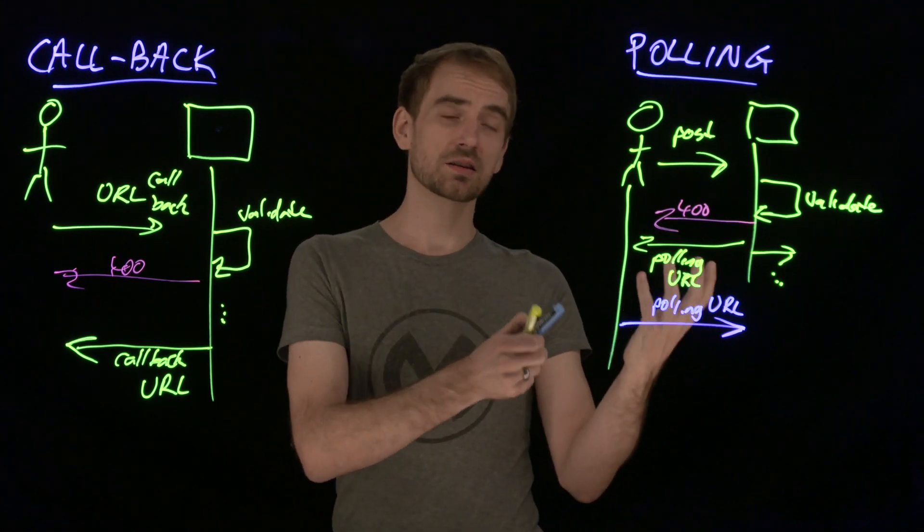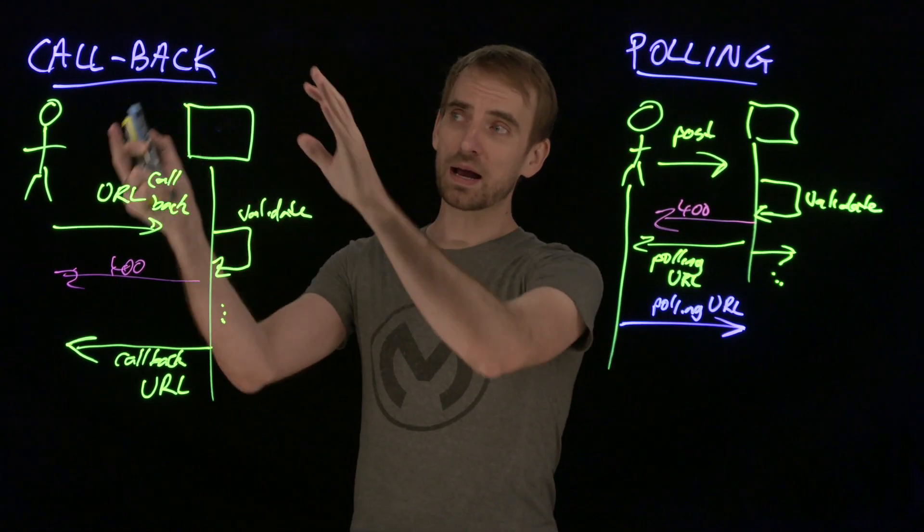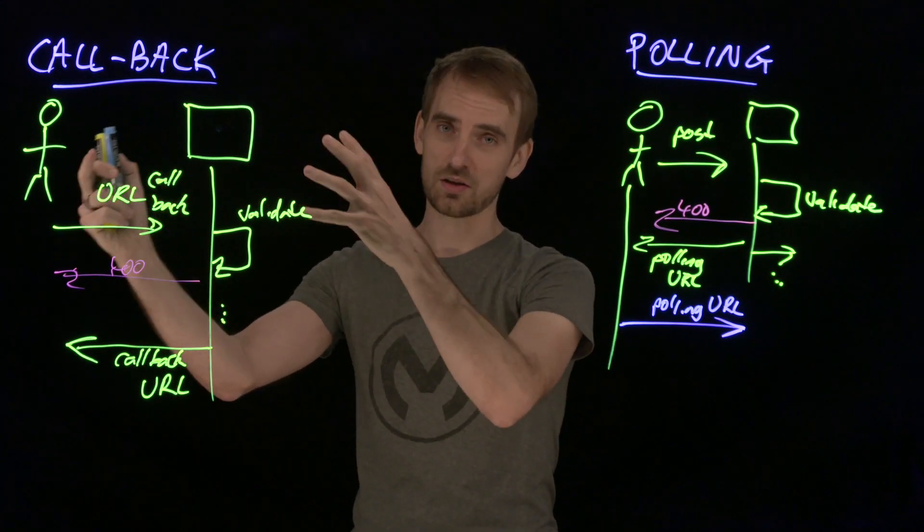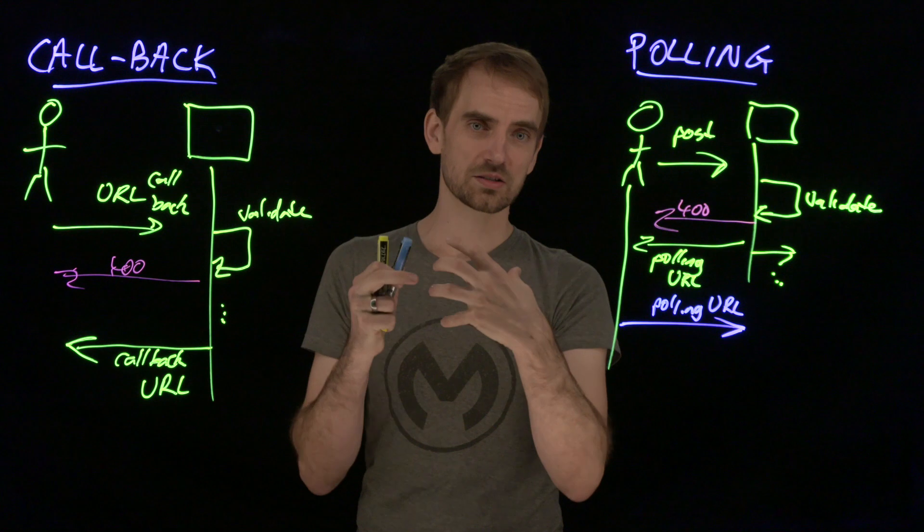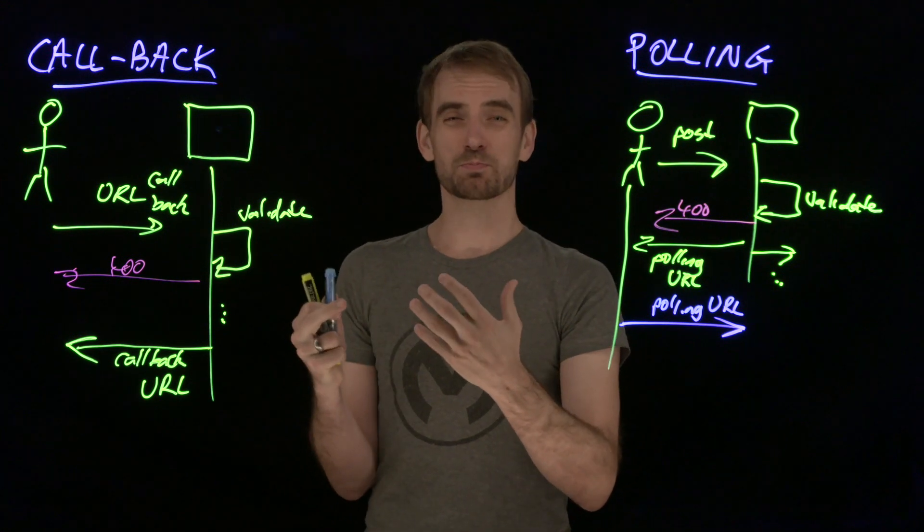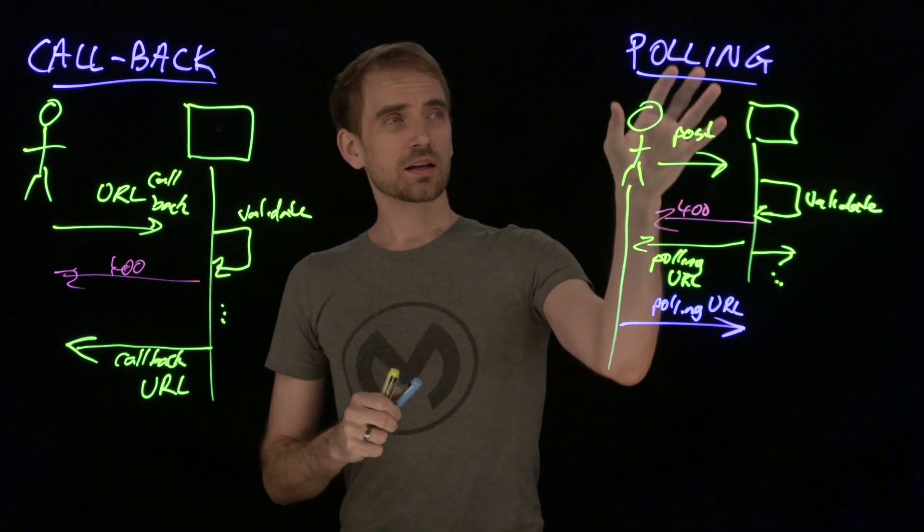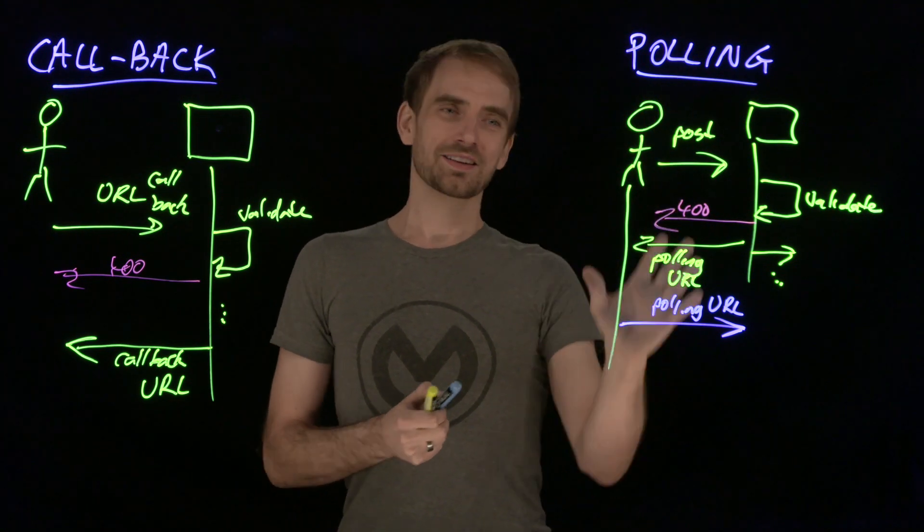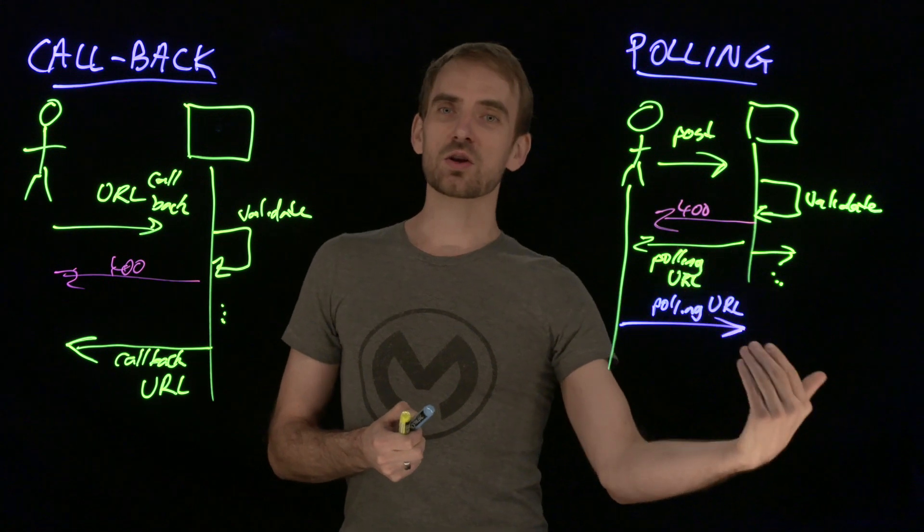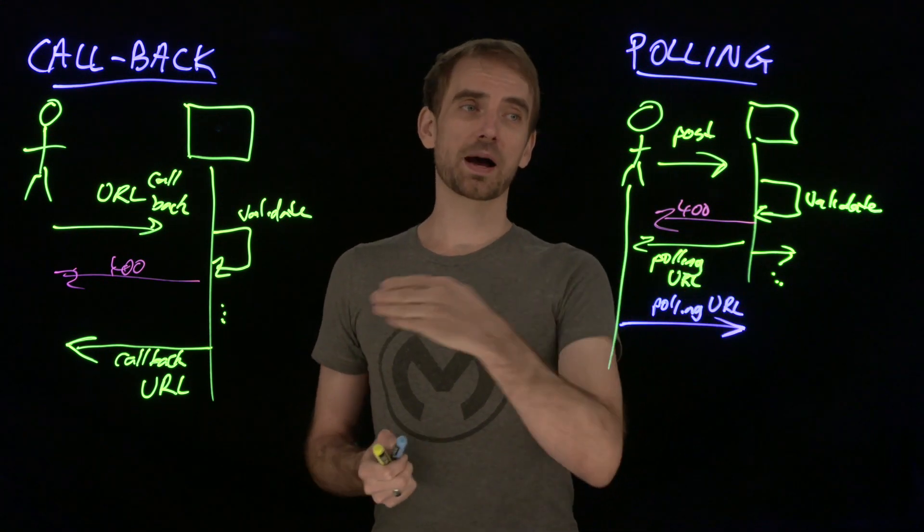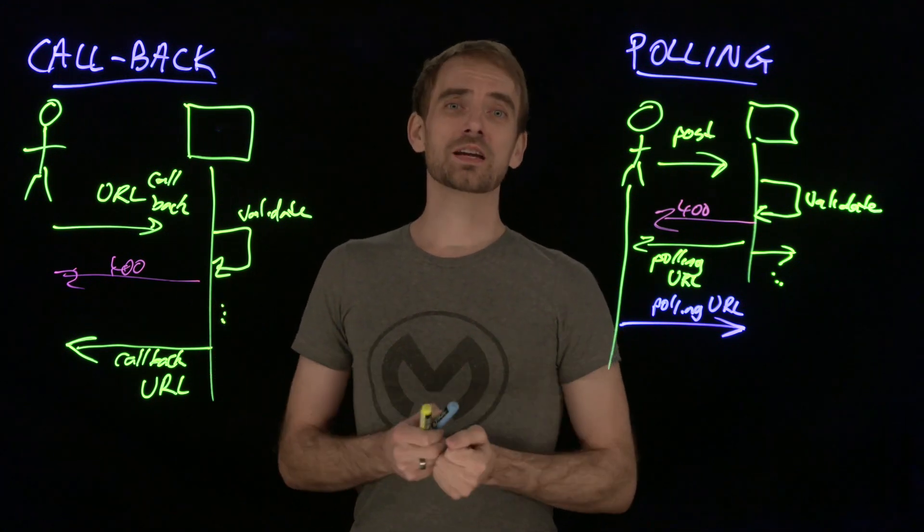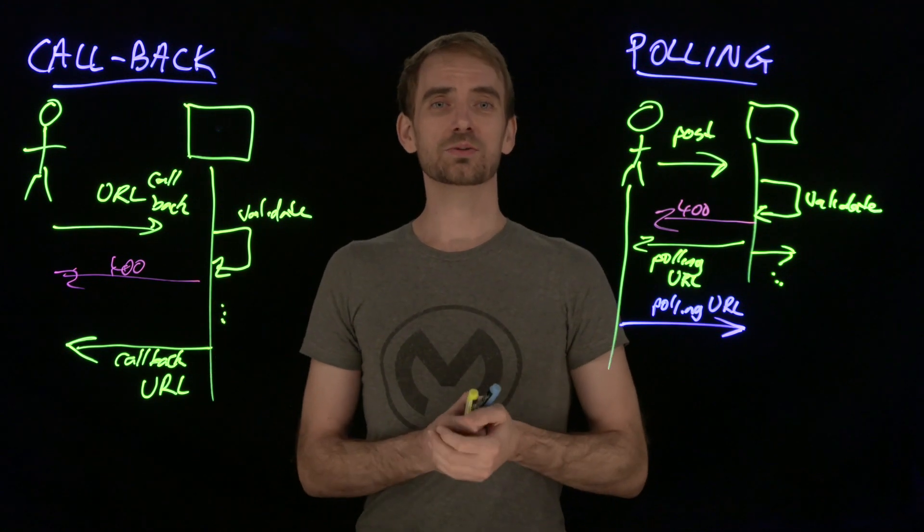You may find that you need to combine these. A callback mechanism might make sense if you control the client and the server interaction, they are inside your data center or inside your ecosystem because, presumably, you can go and set up the network. As far as the polling one, this is where it's the Wild West. You're out in the open internet and you don't know whether you've got a network path back. These are the two options for shoehorning asynchronous invocation into HTTP.